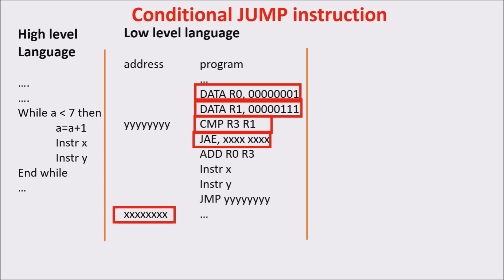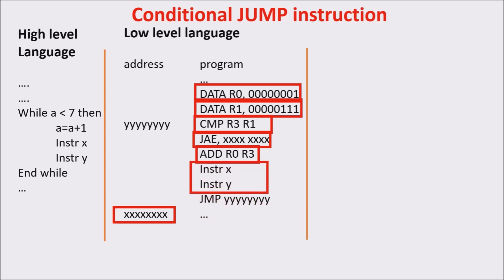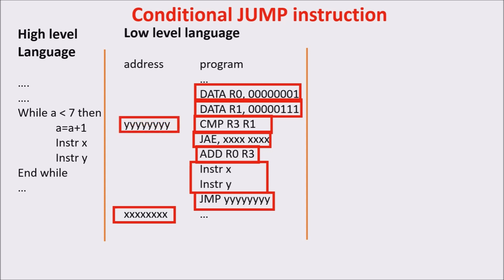But if R3 is less than R1, or A is less than 7, the condition is not met and we increment R3 with the add instruction and perform instructions X and Y. After instruction Y we need an unconditional jump instruction to come back and perform the loop again, so we jump to the address where we execute the compare — where the loop starts.